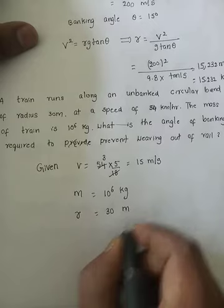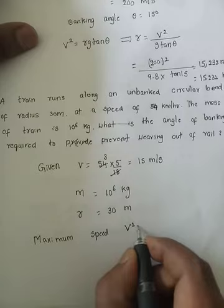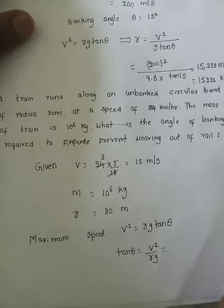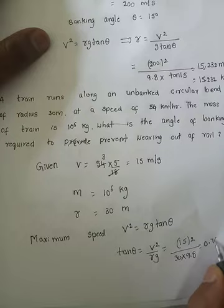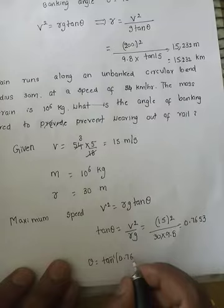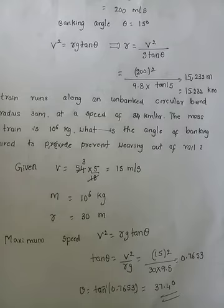Using v² = r·g·tan(θ), we need tan(θ) = v²/(r·g) = 15²/(30 × 9.8) = 0.7653. Therefore θ = tan⁻¹(0.7653) = 37.4 degrees. The banking angle between the outer and inner edge for this train moving on an unbanked road is 37.4 degrees.